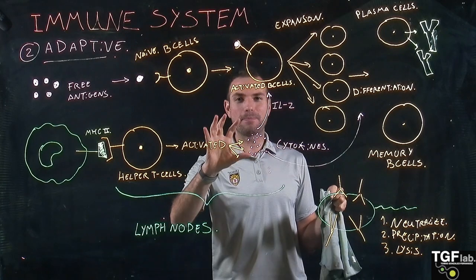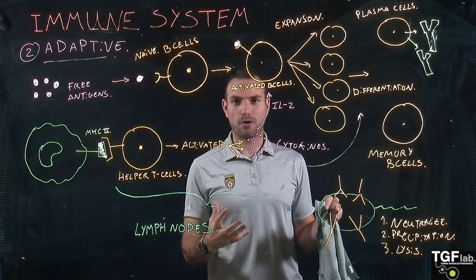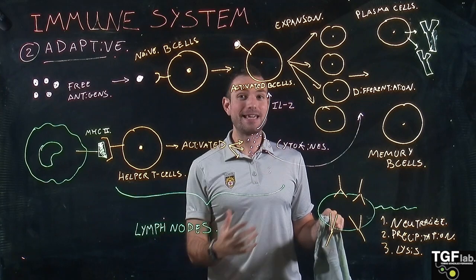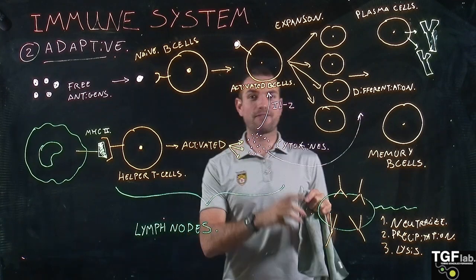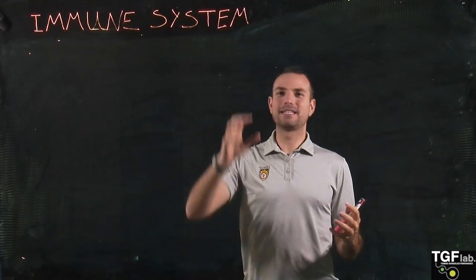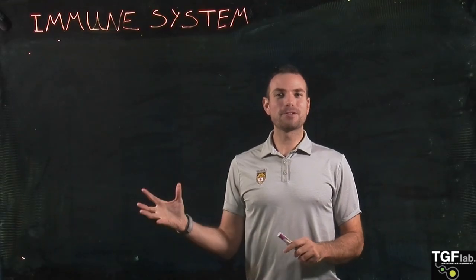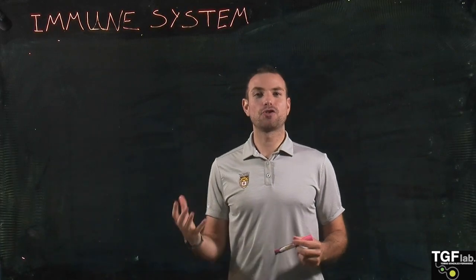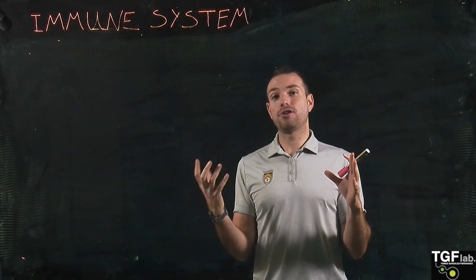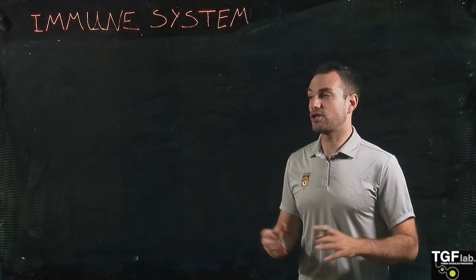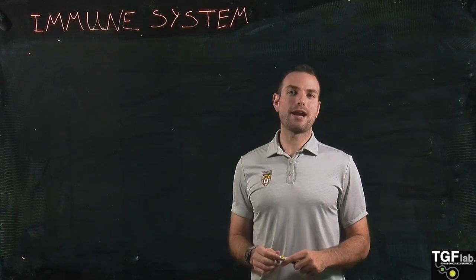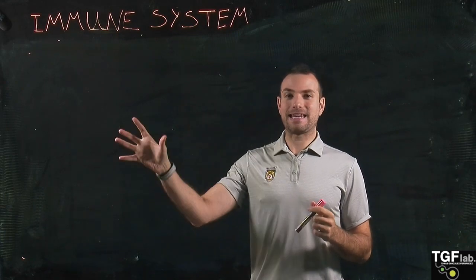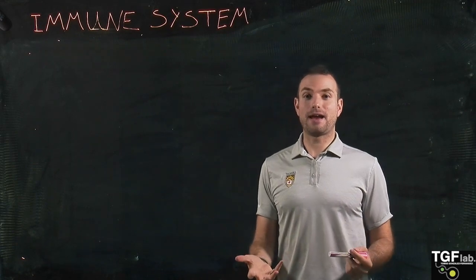We have only seen what happens when we have a microorganism like a bacteria attacking our body, so I focused on the bacteria. Now I'm going to tell you what happens when we have a virus or a cancer cell in our body. Previously, we looked at the adaptive and also the innate immune responses, but only in the context of a bacterial or fungal infection. When there are viruses invading our body, they are pretty different, so we are going to focus on the innate and adaptive immune response in response to a virus.